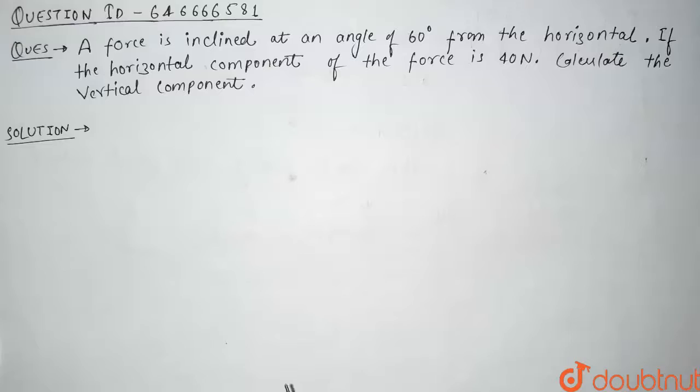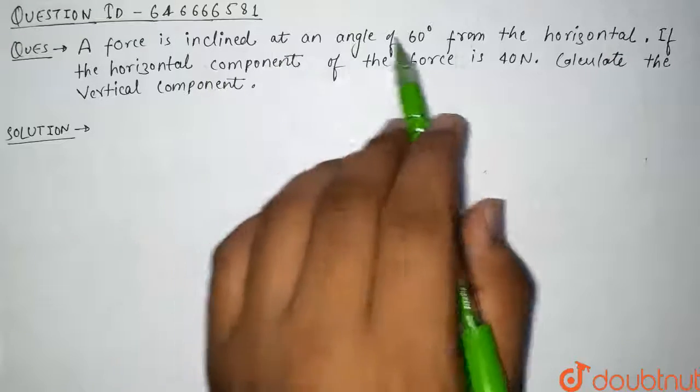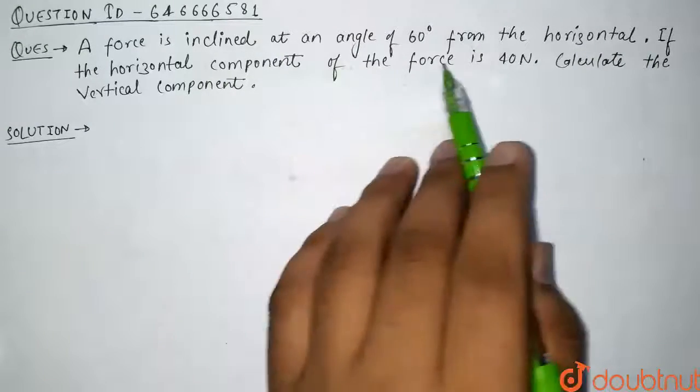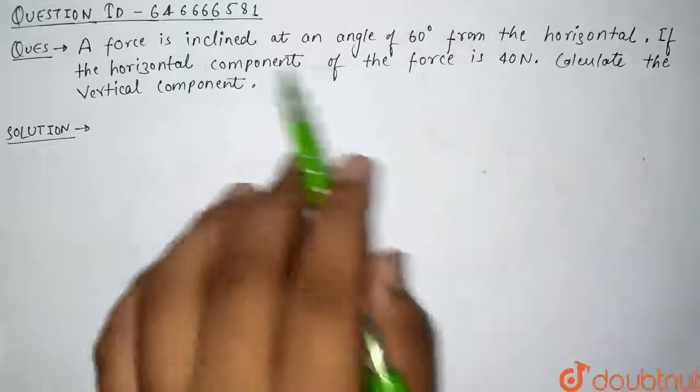Hello guys, so today's question is: a force is inclined at an angle of 60 degrees from the horizontal. If the horizontal component of force is 40 Newton, calculate the vertical component.